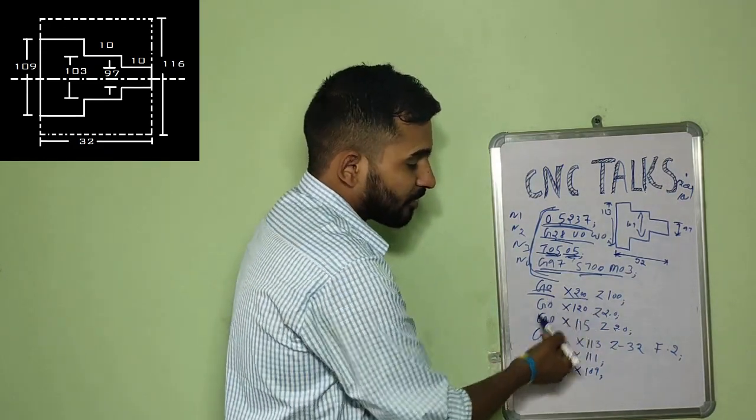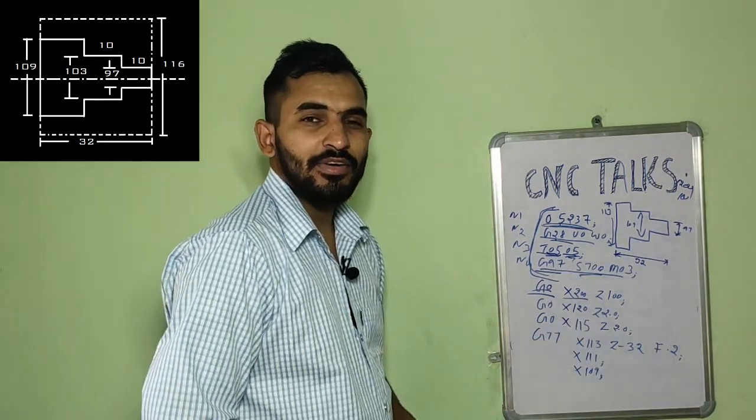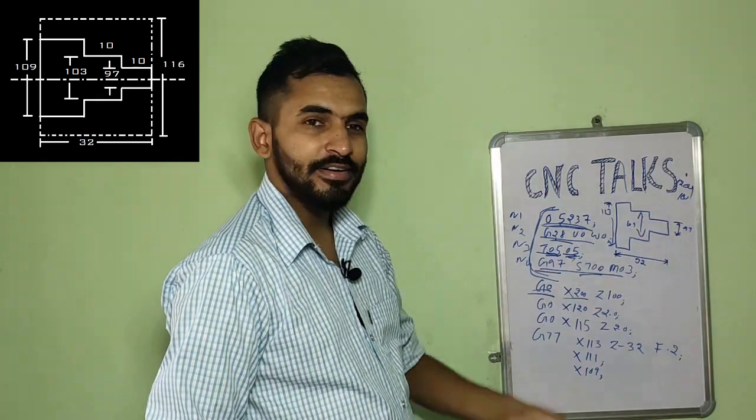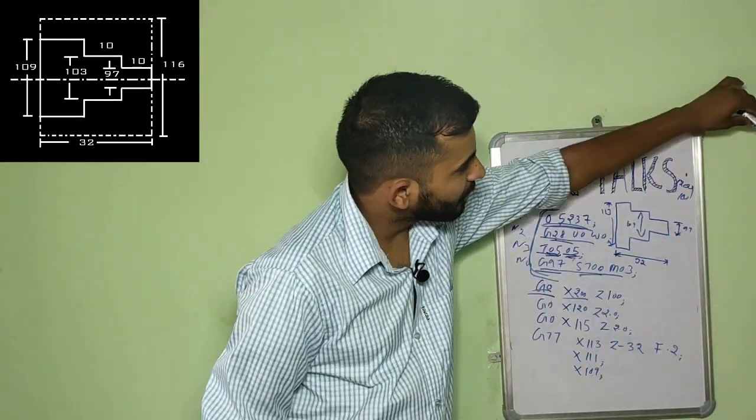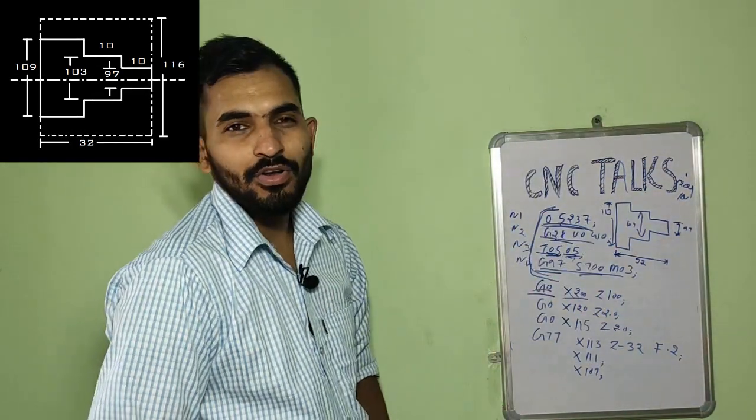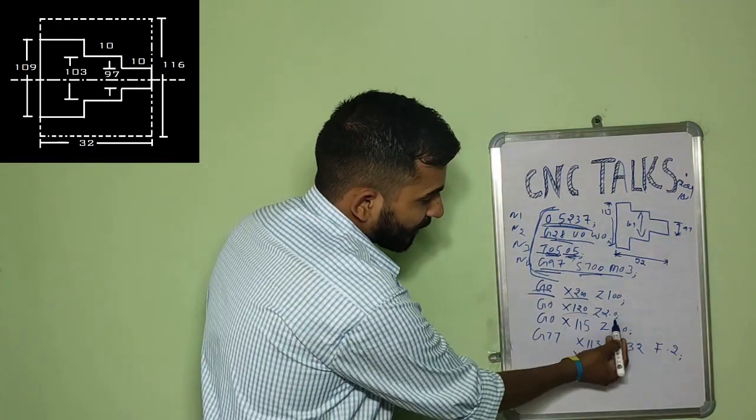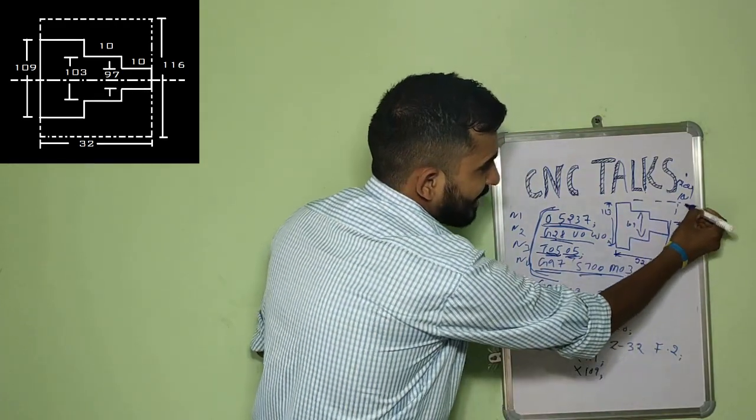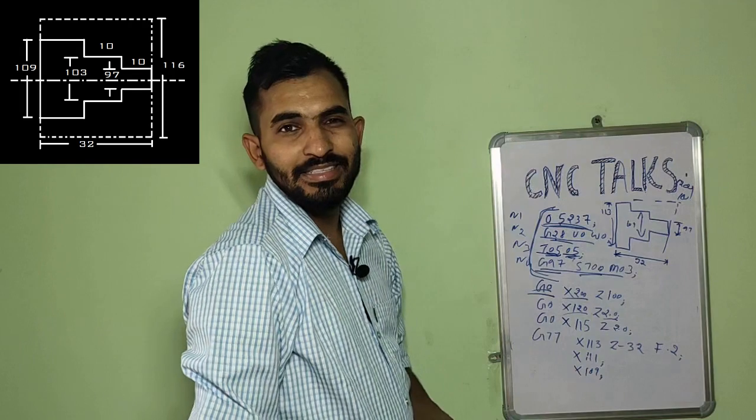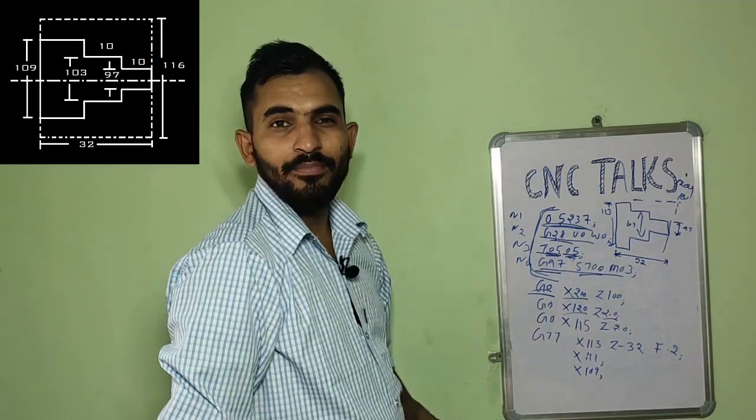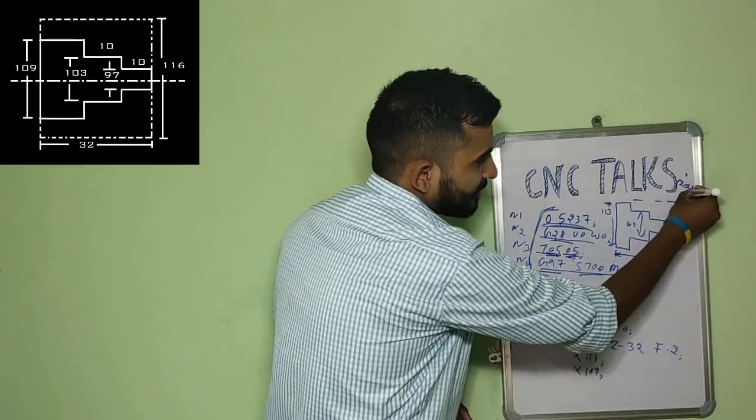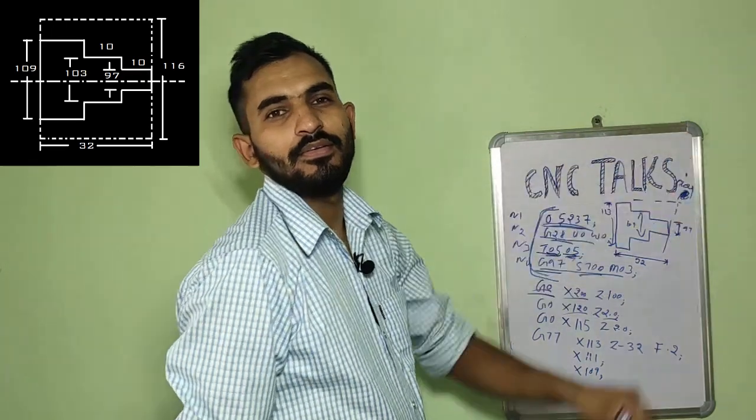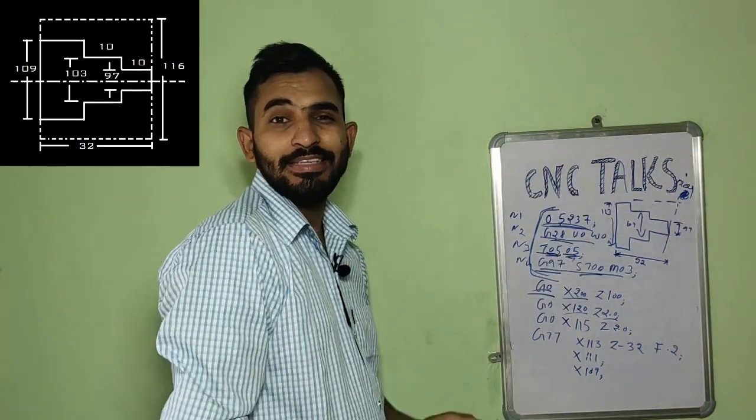We give the rapid interpolation which is G0 and give the coordinates of X and Z. We give the coordinates of X200 and Z100. It means our tool will reach at a distance of 200 along X axis and 100 on Z axis, which means approximately at this position. Now, I will call the tool further closer by giving X120 and Z2. Now our tool is at 2 mm along Z axis and 120 mm along X axis, which means this is approximately the position of our tool.